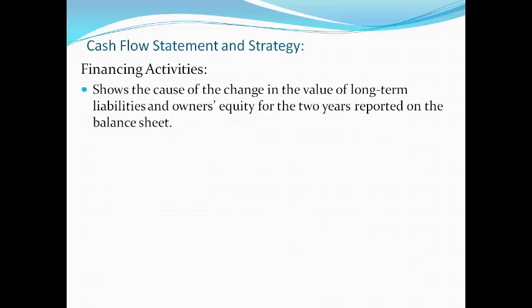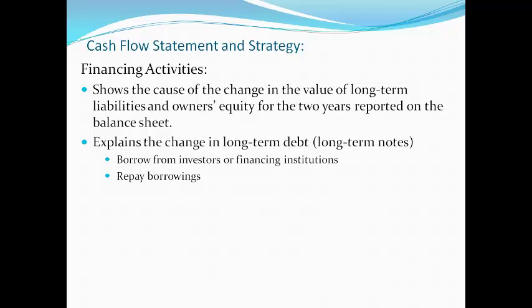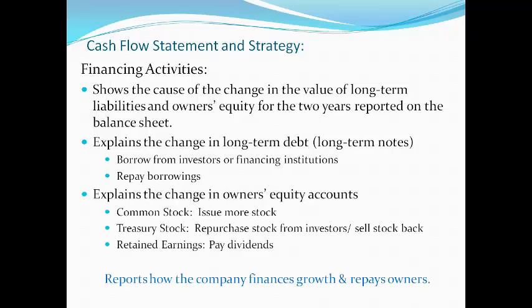Financing activities show where the company gets funds for operating the business and whether funds are being repaid to creditors or investors. It reports the cause of the change in long-term liabilities and owner's equity for the two years reported on the balance sheet. The cash amount borrowed and repaid is reported, as well as cash paid to or received from owners through issuing common stock, buying common stock back, or paying dividends. Borrowing more than repaying could indicate cash flow problems or plans to invest for growth. Cash generated from financing activities should be used to purchase items reported in the investing section. Borrowing and raising money from investors to cover negative operating cash flows is a sign of operating problems. Companies with excess cash will often return it to investors by buying back stock or paying dividends.